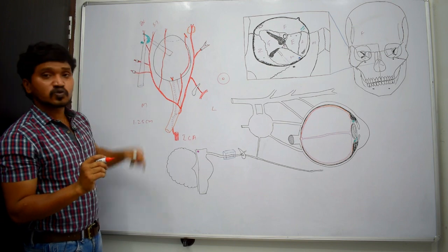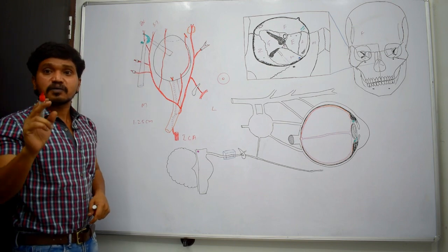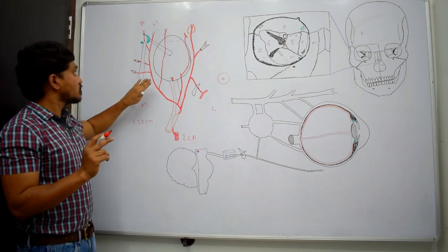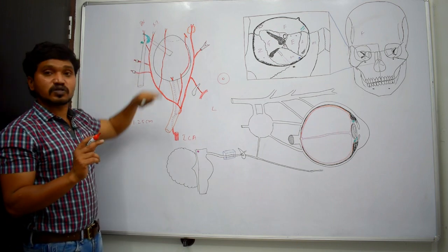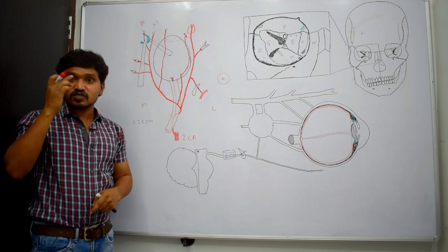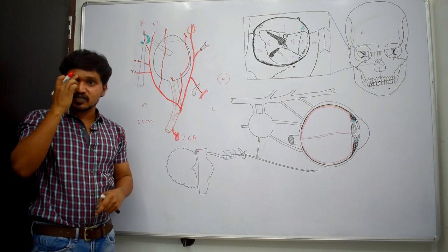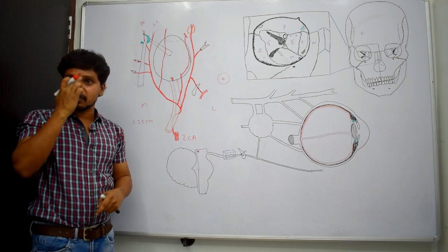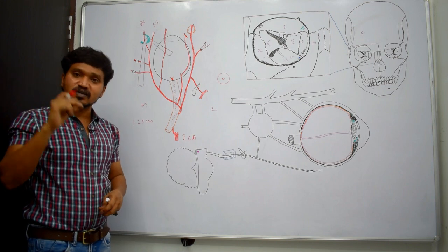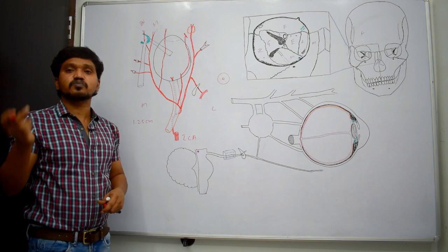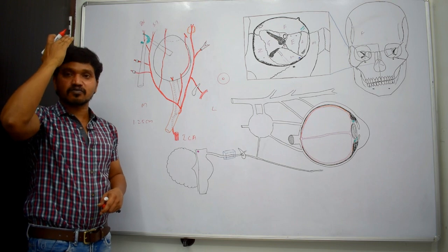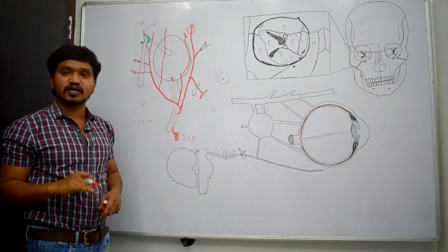The supraorbital artery passes through the superior part of the orbit. When it reaches the supraorbital margin, it passes through the supraorbital notch or supraorbital foramen, then enters the forehead to supply the forehead and some part of the scalp.